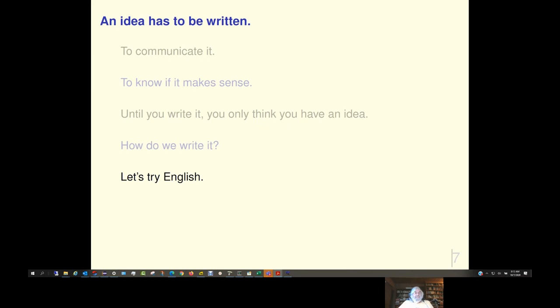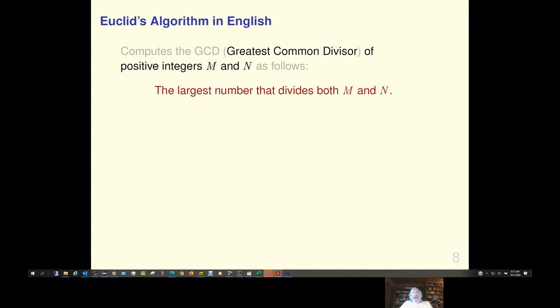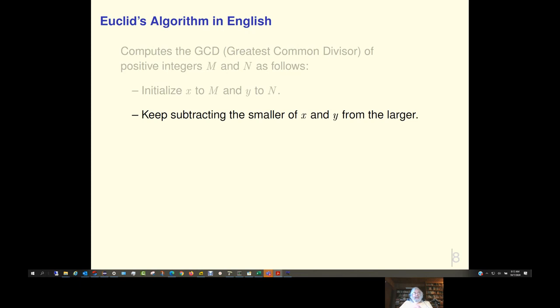So, how do we write it down? Well, let's try English. So, I'll describe Euclid's algorithm, not because Euclid's algorithm is terribly interesting. And actually, it is. But it's the simplest algorithm I know, pretty much. So, Euclid's algorithm in English. It computes the GCD, the greatest common divisor, of positive integers, M and N, as follows. Now, the GCD of M and N is the largest number that divides both M and N. So, here's the algorithm. It initializes X, two variables, X and Y, initializes X to M and Y to N. And it keeps subtracting the smaller of X and Y from the larger. And it stops when X equals Y. And at that point, X and Y both equal the GCD of M and N. It's really a beautiful algorithm.